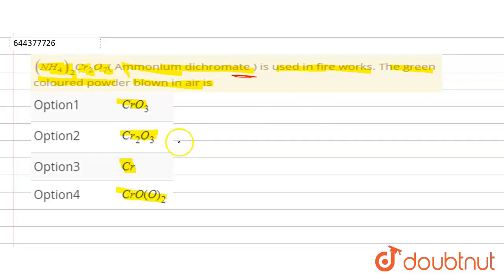Let's see the reaction. When NH4Cr2O7 is blown in the air, it gives Cr2O3, which...